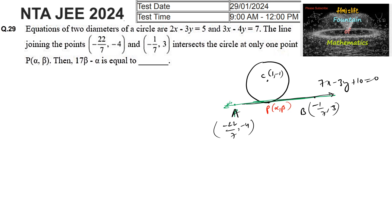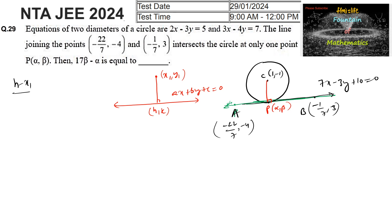Point P(α, β) is the foot of the perpendicular from center C upon the tangent line. The formula for the foot of perpendicular from point (x1, y1) to line ax plus by plus c equals 0, giving foot (h, k): h minus x1 over a equals k minus y1 over b equals minus (ax1 plus by1 plus c) over (a squared plus b squared).